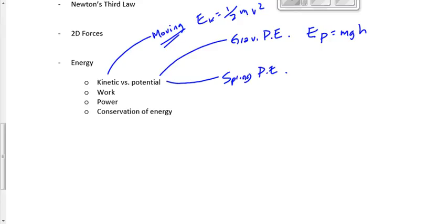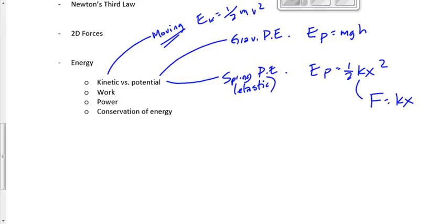Spring potential energy, or elastic potential energy, is found using the equation one-half kx squared. x is the displacement of the spring — how much it's stretched or compressed, not how much it's moving across the floor. k is the spring constant, which sometimes we're given and sometimes we have to find using Hooke's Law: F equals kx. That's really just the definition of simple harmonic motion — motion in which the restoring force is proportional to the displacement.